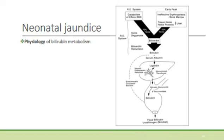Neonatal jaundice is one of the most commonly found problems in the neonatal period. 50% of term babies and up to 85% of preterm babies will develop jaundice in the first week of life. Jaundice is due to deposition of bilirubin in the skin, sclera and/or mucous membranes, leading to the yellow colour. It is important to remember that jaundice is a clinical sign and not a diagnosis. To make the diagnosis, it is important to know the physiology of bilirubin metabolism, and then to add that to the clinical examination and special investigations.